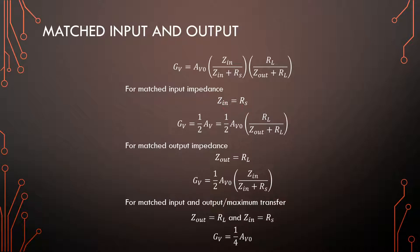In a voltage amplifier, if Zin is much greater than Rs, we don't have any losses on the input. But sometimes the requirement is to have them be the same value. Then the total gain will be half the maximum gain times the output loading factor. And if we have a requirement that the output impedance and the load should be matched, then we have half times AV0 times the input loading factor. The case where Zin is much greater than Rs is more typical for a rule-of-thumb design.